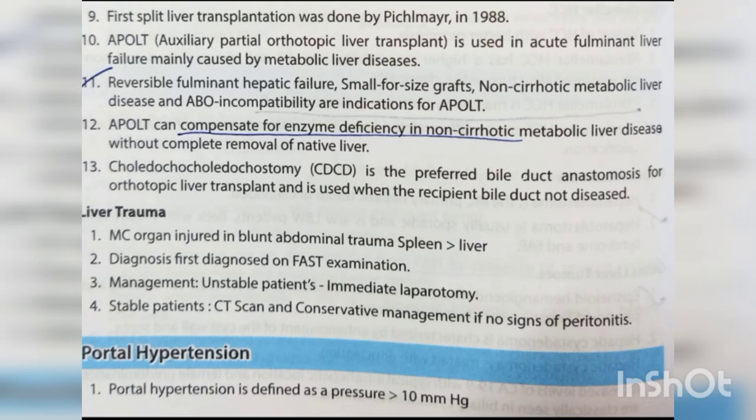The first split liver transplantation was done by Pichlmayr in 1988. APOLT (Auxiliary Partial Orthotopic Liver Transplant) is used in acute fulminant liver failure mainly caused by metabolic liver diseases, reversible fulminant hepatic failure, small-for-size graft, non-cirrhotic metabolic liver disease, and ABO incompatibility. APOLT can compensate for enzyme deficiency in non-cirrhotic metabolic liver diseases without complete removal of the native liver.